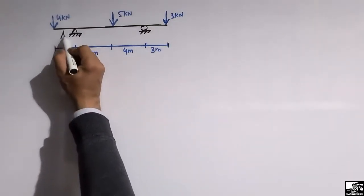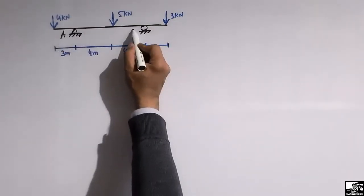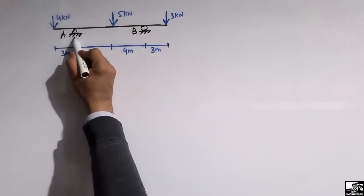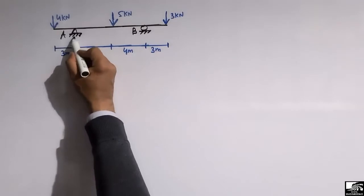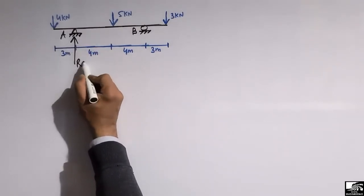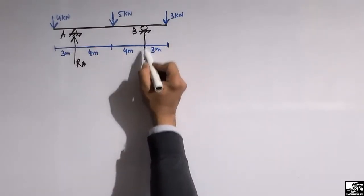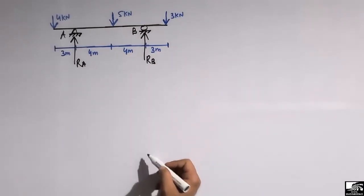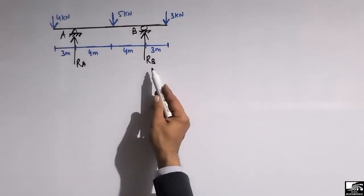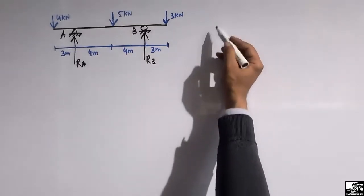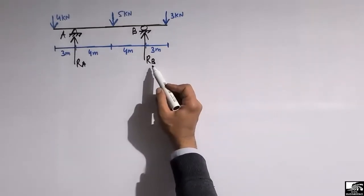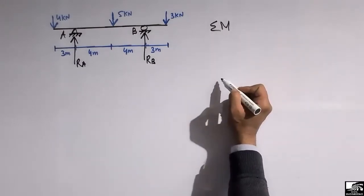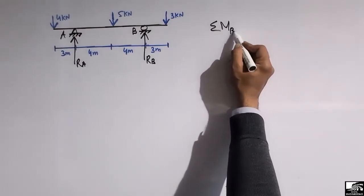First, let's find the support reactions. Consider this as support A and this as support B. The reaction RA is acting in the upward direction and the reaction RB is also acting in the upward direction. To find RA and RB, we take the summation of moments at any point equal to zero.